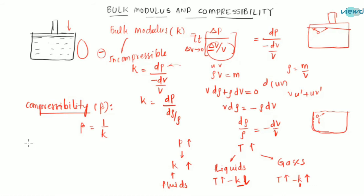Now we need to write the units. Bulk modulus has units of pressure, which is Newton per meter square. The volumetric strain has no units. And the compressibility units are meter square per Newton.